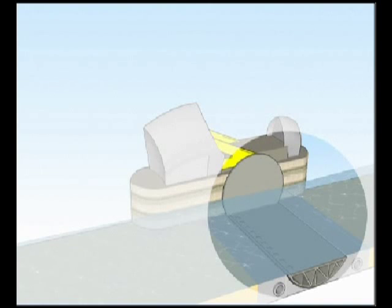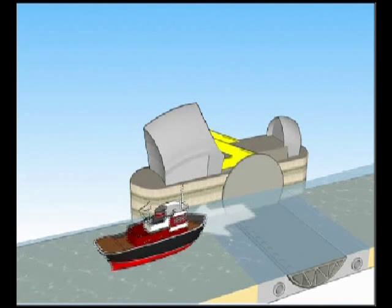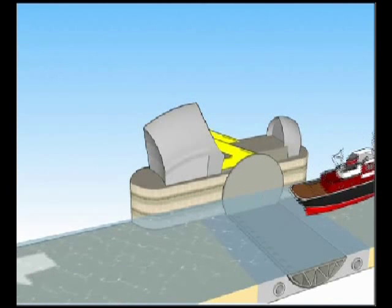In the open position, the gate lies flat with the riverbed. This allows the tide to ebb and flow naturally, and river traffic to pass through the gates.